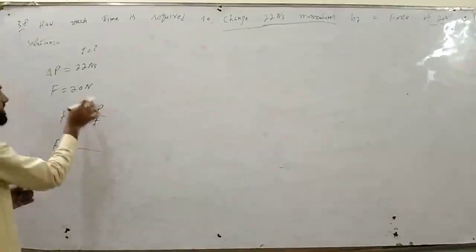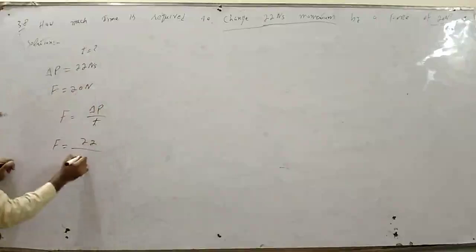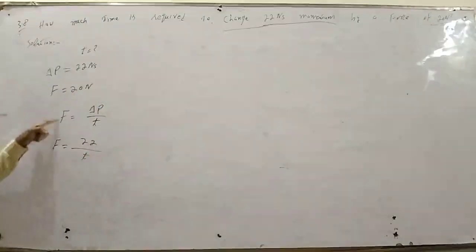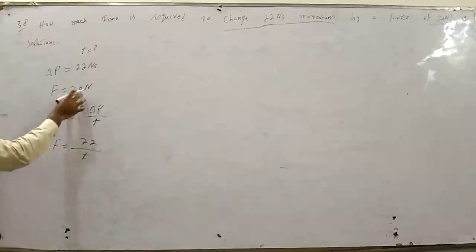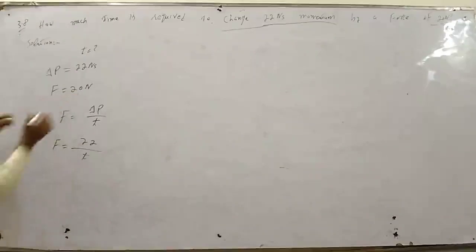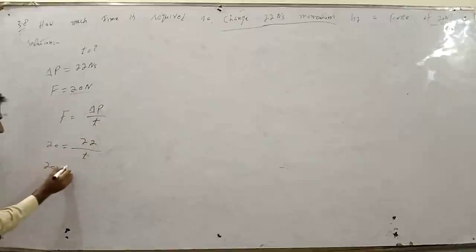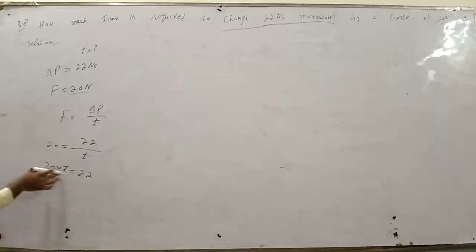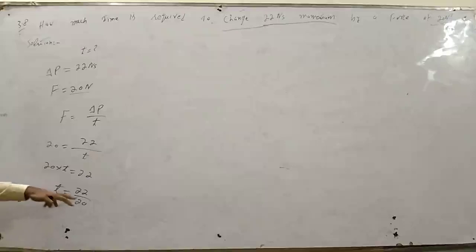F is equal to del P over T। Change in momentum 22, over T। Time दिया हुआ नहीं, पता नहीं। Force किसके equal है - 20 newton। Force की जगह पर 20 newton आ जाएगा। 20 multiply by T is equal to 22। T is equal to 22 over 20।